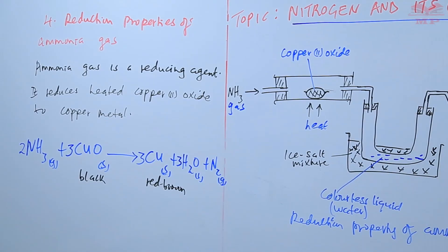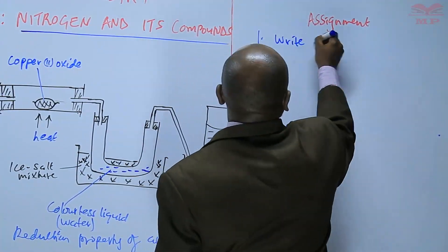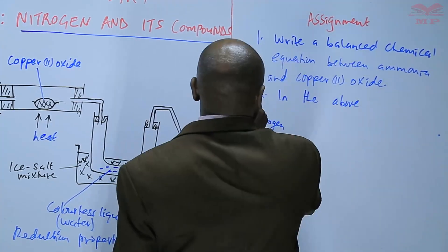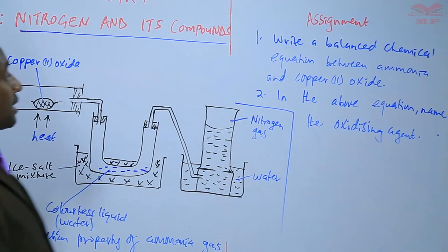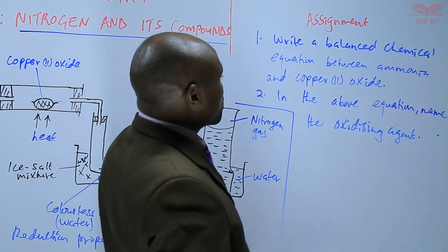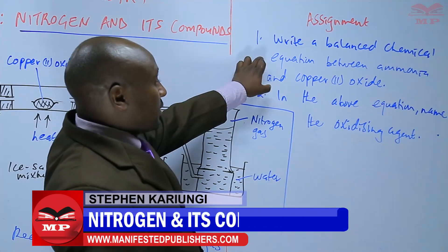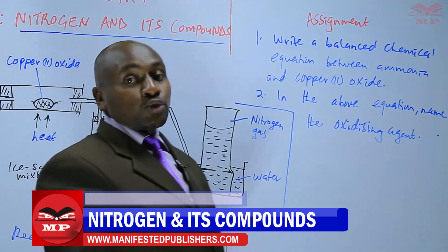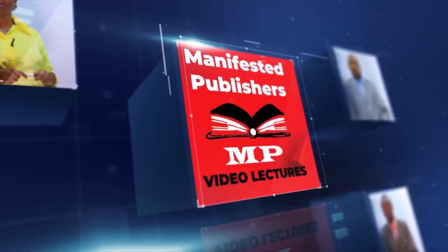Our assignment: question one — write a balanced chemical equation between ammonia and copper(II) oxide. Question two — in the above equation, name the oxidizing agent. We are going to stop there until next time. Goodbye.